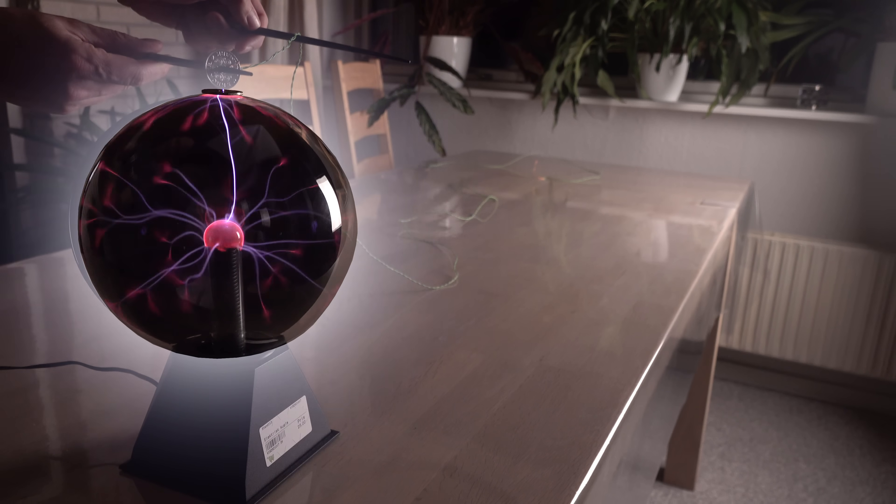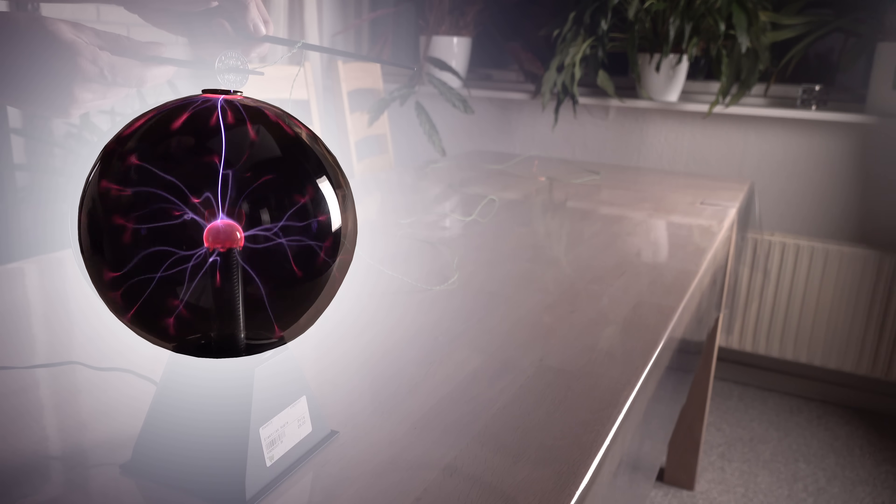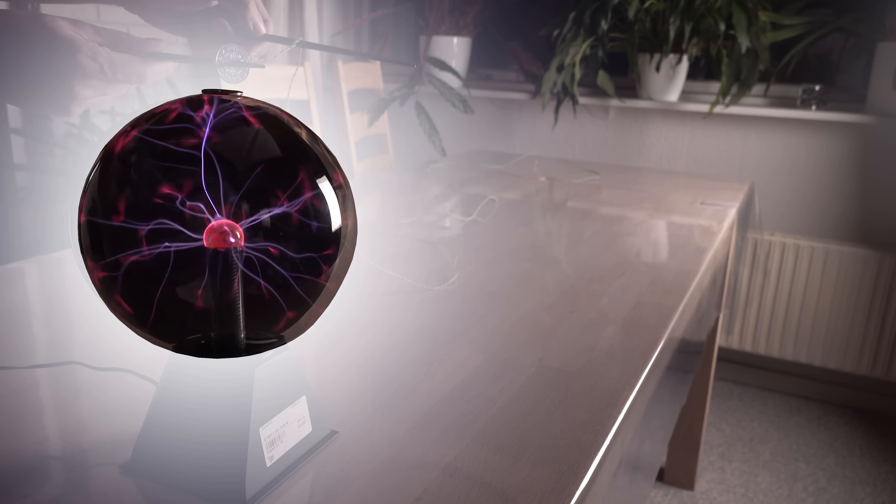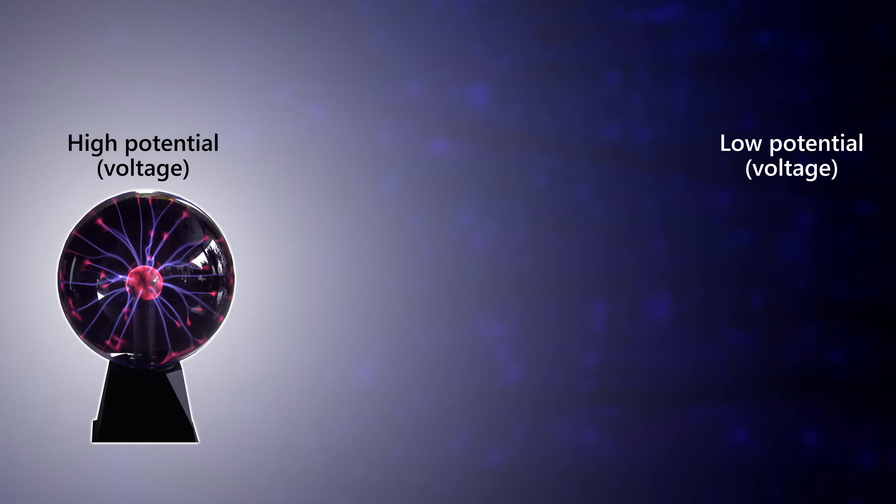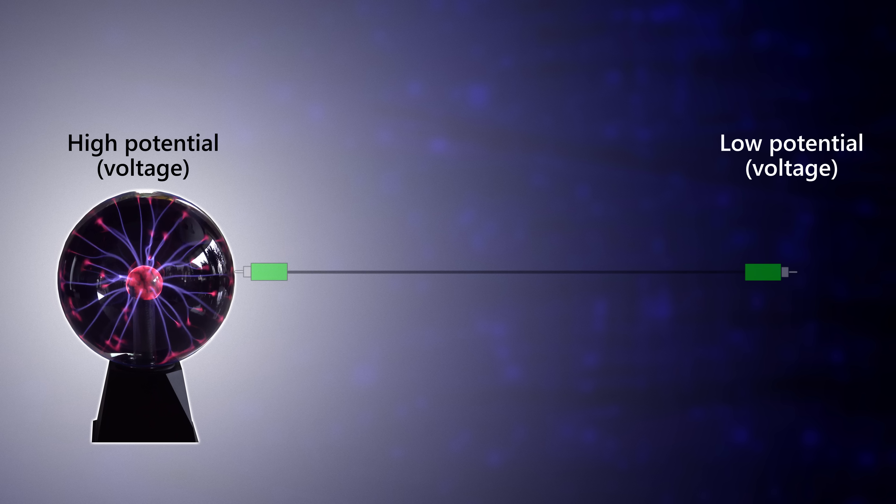The electric field created by the electrode inside the globe will focus on any conductive path to a place of lower potential, voltage, farther away in the electric field. The more conductive and the higher the capacitance, the more attractive the path is for the capacitive coupling to the electrode.